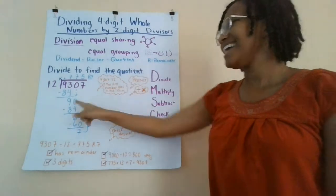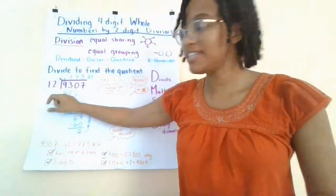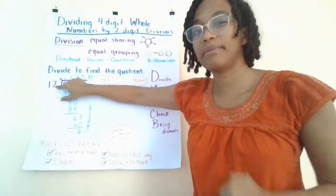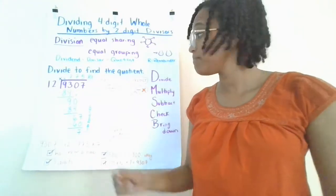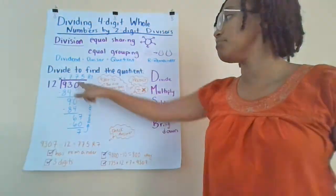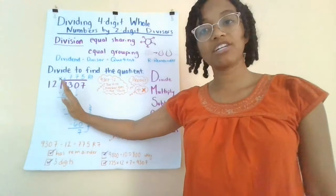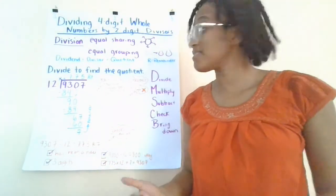Next step, check. Is 9 smaller than 12? Yes! That's really good. If my difference here is smaller than my divisor, that means I'm ready to go. If it's too big, I probably need to check my division and multiplication. Now that we've checked, we're ready to bring down. I bring down the next digit. Notice how I make sure to align all of my work by place value. That's going to make this a lot easier.